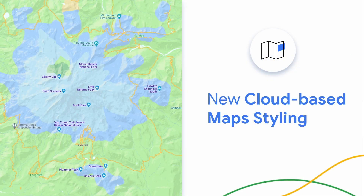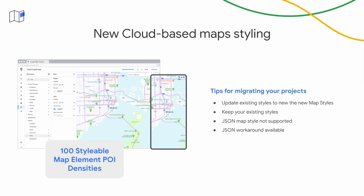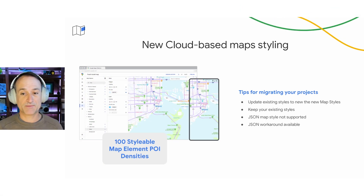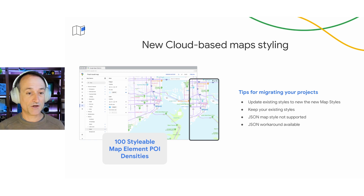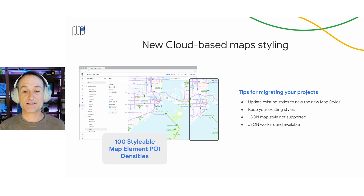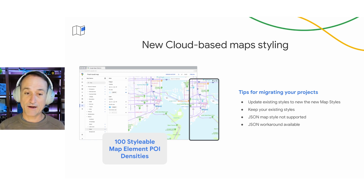In December, we made the next generation of our cloud-based map styling generally available, providing you with over 100 stylable map elements that help you style and customize the base map and activate new features like POI density. If you have map styles created in an earlier version of cloud-based map styling, you can update them to the new styling. A few tips: you don't have to update earlier styles to the latest release — your existing styles will just work. However, if you want to use the improvements in the latest release, you have to update to recreate your legacy styles. Also, importing a JSON map style is not supported in the latest cloud styling, but a workaround is to import the JSON style into the legacy style editor, and then update it.